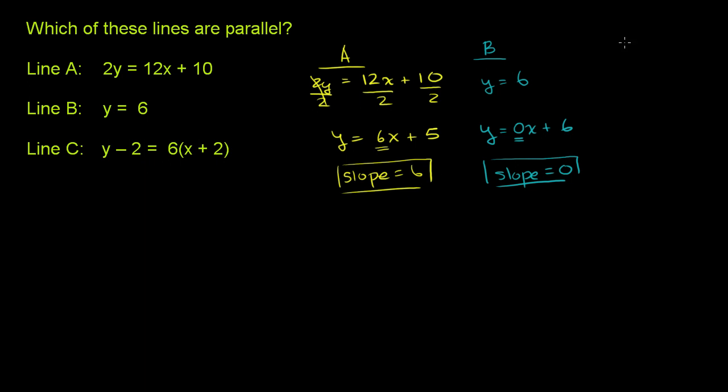So let's try line C. I'll do it down here. Line C, that's y minus 2 is equal to 6 times x plus 2. And this is actually in point-slope form, where the point x is equal to negative 2, y is equal to 2. So the point negative 2, 2 is being represented here, because you're subtracting the points. And the slope is 6. So we already know that the slope is equal to 6.